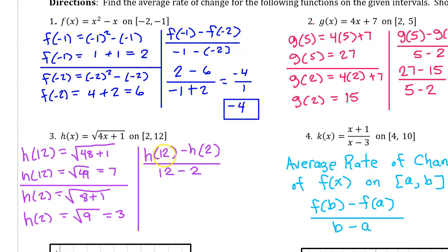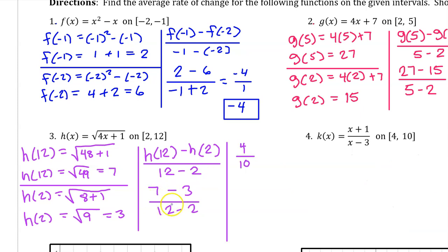The average rate of change is h(12) minus h(2) over 12 minus 2. h(12) was 7 and h(2) was 3, so we have 7 minus 3 over 10. This expression is equivalent to 4 over 10, which reduces to 2 over 5. That is the average rate of change.